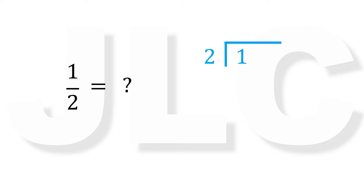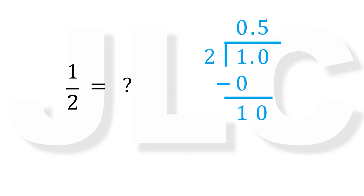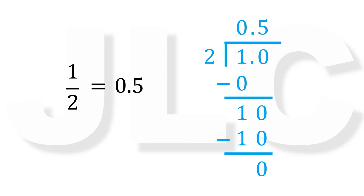1 divided by 2 is 0, then 0 times 2 is 0, 1 minus 0 is 1. We bring down 0; 10 divided by 2 is 5, 5 times 2 is 10, 10 minus 10 is 0, and the answer is 0.5.